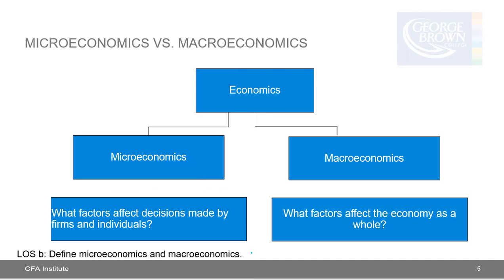Learning outcome statement B: define microeconomics and macroeconomics. Macroeconomics is the study of the economy as a whole — for example, it examines factors that affect a country's economic growth. This chapter focuses on the factors that influence the supply and demand of goods and services. Supply refers to the quantity of a product or service sellers are willing to sell, and demand refers to the quantity buyers desire to buy. Knowing how microeconomics affects a company's revenues, costs, and profit is vital to understanding the health of a company and its value as an investment.